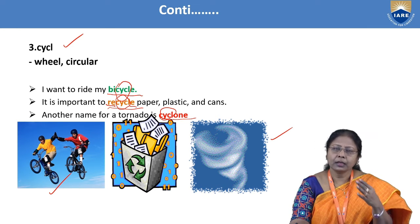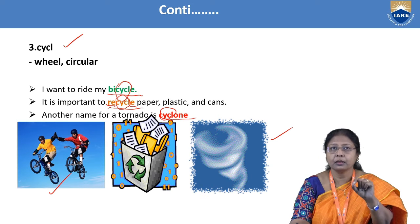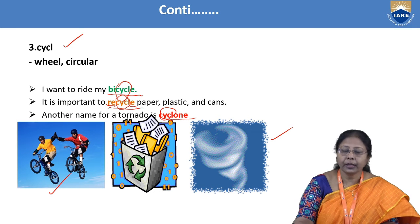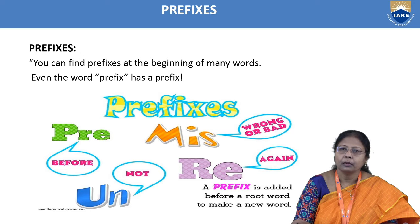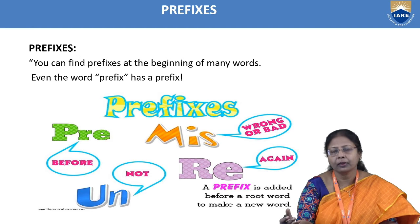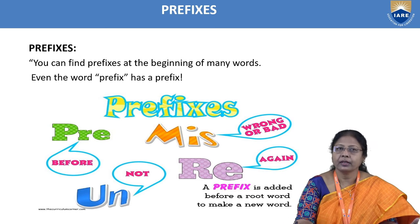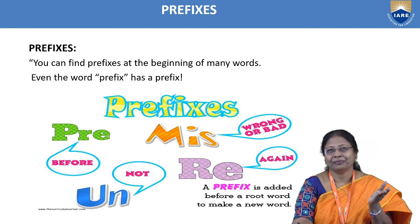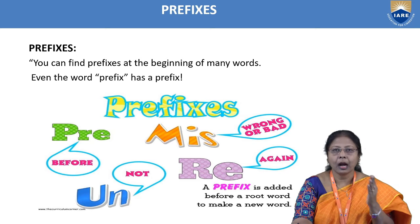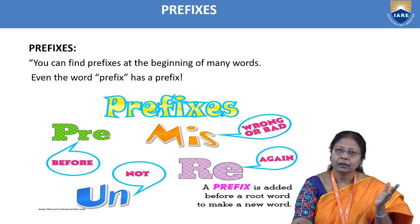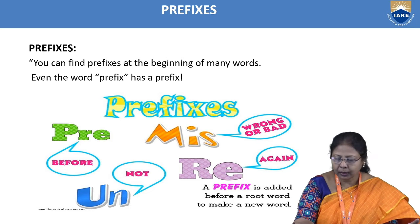Usually, root words stand alone without prefix and suffix, but if we add prefix and suffix to these root words, we get a very good meaning. Now let's discuss prefixes. A prefix is added at the beginning of any word. In the word 'prefix' itself, 'pre' means 'before.' Common prefixes include: 'un' (not), 'mis' (wrong or bad), 're' (again). A prefix is added before the root word to make a new word.